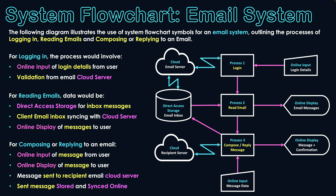I hope this video has given you an introduction to how system flowchart symbols can be used to represent an email system. If you start off by drawing your processes in a logical sequence, the rest might come together more easily. This video has covered the use of processes, online inputs and online displays, how cloud servers represent platforms stored online connected with telecommunication links, and local storage for storing email messages in an inbox.